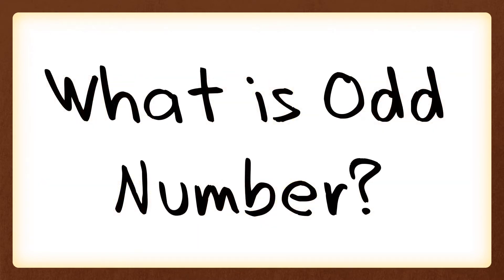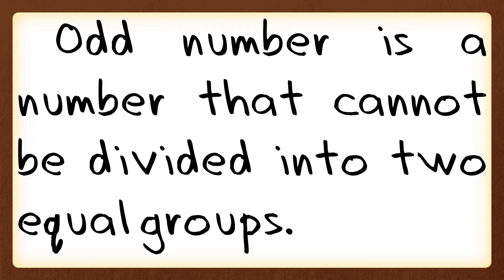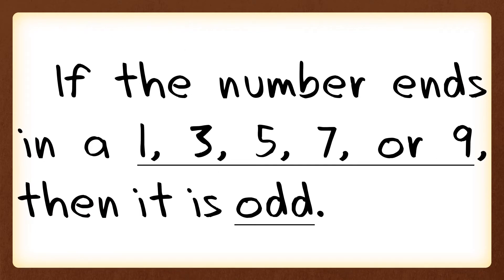Let's proceed to what is an odd number. An odd number is a number that cannot be divided into two equal groups, meaning if we divide two numbers there will be a remainder, or there will be an excess on the number that we're going to divide. And also, if the number ends in one, three, five, seven, or nine, then it is odd.